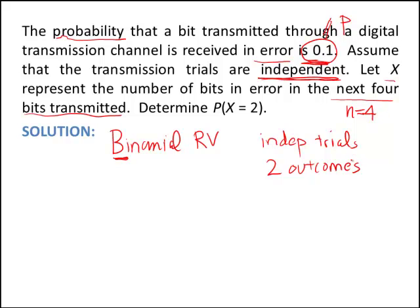And the last, that we've already stated, is that probability has to stay constant. It can't change after every transmission. The probability of having a transmission error can't change across the board. So p is constant, and so we have a binomial random variable.